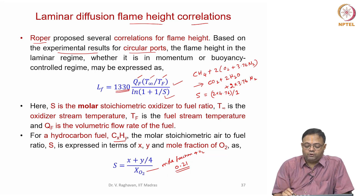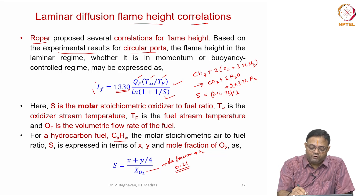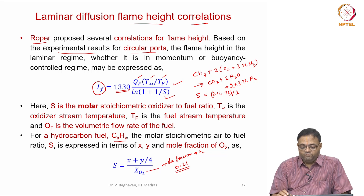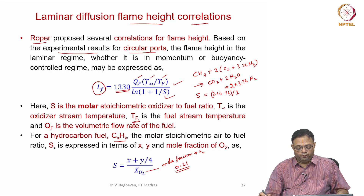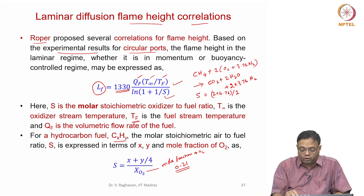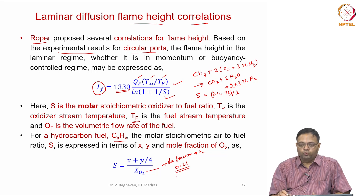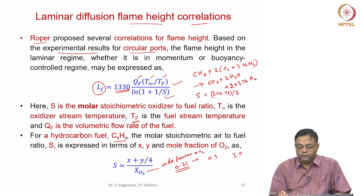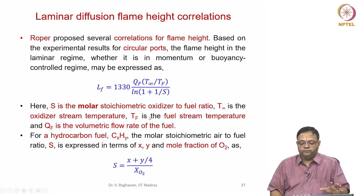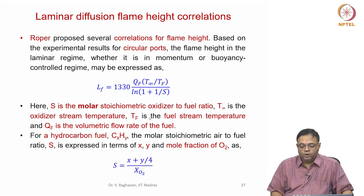The empirical constant is 1330, and this correlation predicts flame height for several fuels from circular port burners where the fuel stream is subjected to different temperatures. It is a very useful correlation that can also be extended to environments where air is enriched with more O₂ — for example, XO₂ increased from 0.21 to 0.3, or even pure oxygen (XO₂ = 1.0). This robust correlation handles the mole fraction of oxygen in the oxidizer.